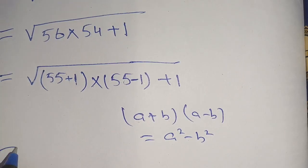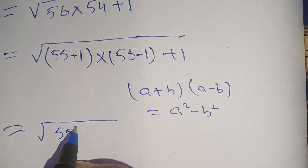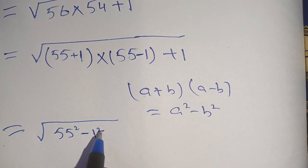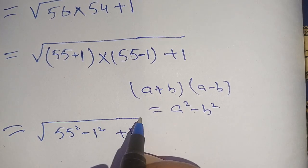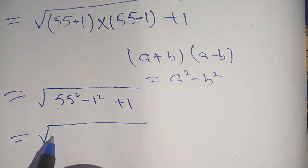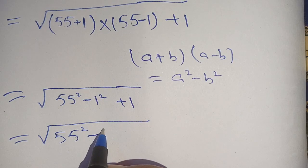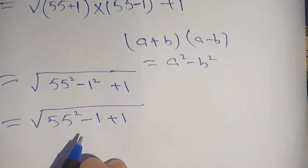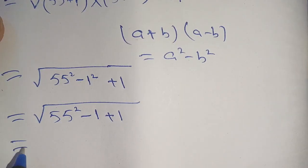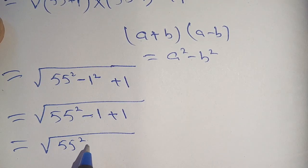Now we have square root of 55 squared minus 1 squared, which is 1, plus 1. Now we have square root of 55 squared minus 1 plus 1, which becomes 0.